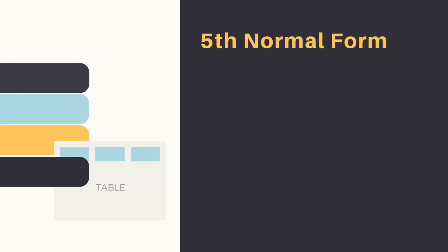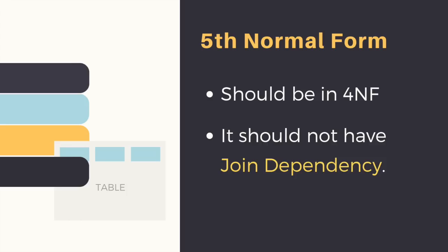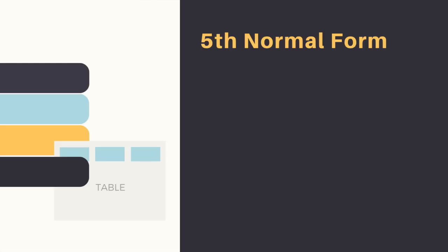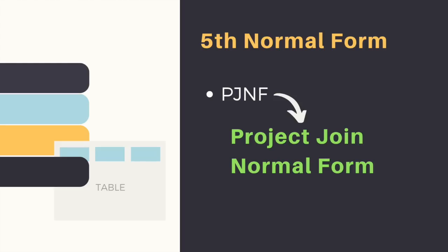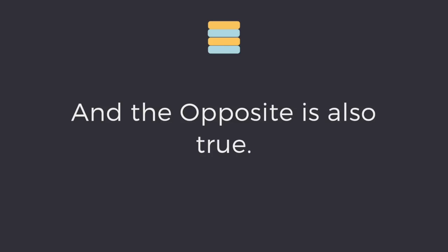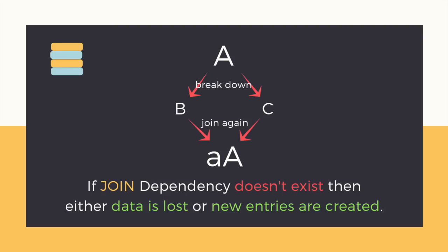For a table to be in the fifth normal form, it should be in fourth normal form and should not have join dependency. Just like other normal forms, the fifth normal form also comes with a dependency concept which is join dependency, and because of which the fifth normal form is also known as PJNF, or Project Join Normal Form. In simpler words, if a relation has join dependency, it can be divided into smaller relations such that if we combine the smaller relations we will get the original table.